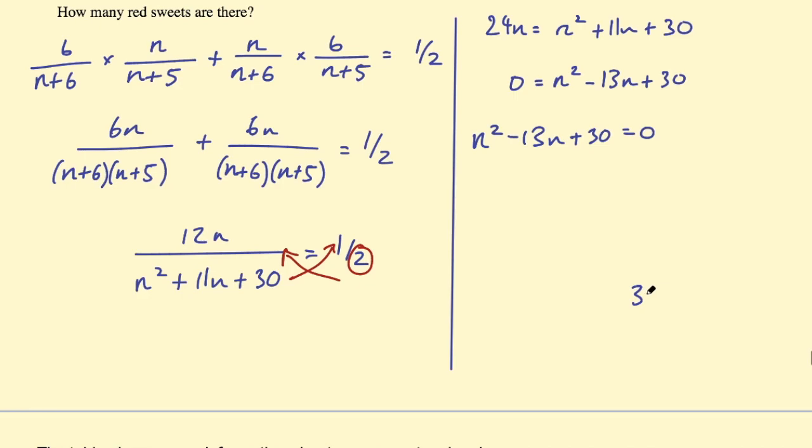And then I need to factorize this. So what are two factors of 30 that makes minus 13? Well 30 could be 3 times 10, and minus 3 minus 10 that will make minus 13. So I can factorize this into n minus 3 and n minus 10 equals 0.